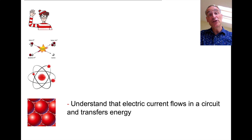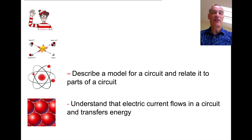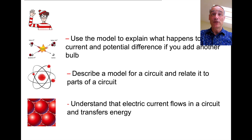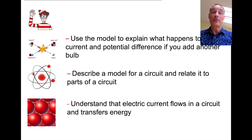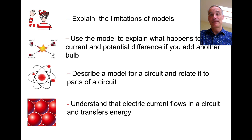Let's just check. You should now understand that electrical current is the flow of charge, and that the charges carry the energy from the battery or power supply to the components. You should be able to describe at least one model of a circuit and say what each part of the model represents. You should be able to explain, using the model, why the voltage drops across each component as you put more components in series - because they have to share that voltage and that energy. And one or two of you might be able to come up with some limitations of your model. Now go onto the worksheet and have a go. I look forward to seeing you next week.